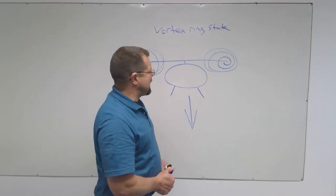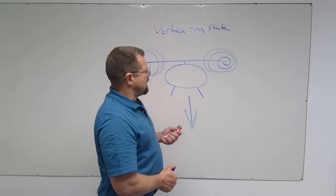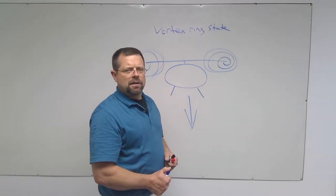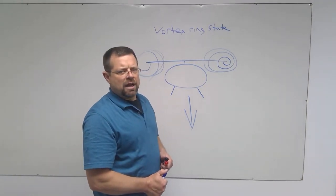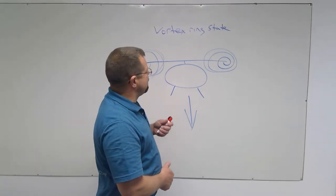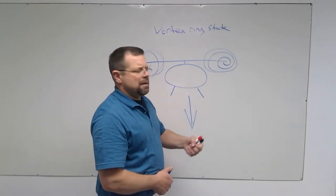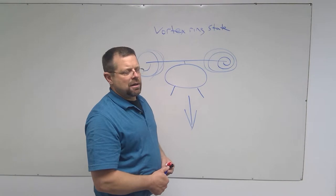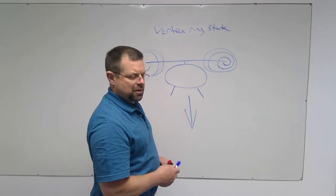Adding an angle of attack on a helicopter that is falling in a vortex ring state is not going to fix the problem. The problem has to be solved by moving the helicopter out of that dirty air, and we'll talk about that in just a minute.